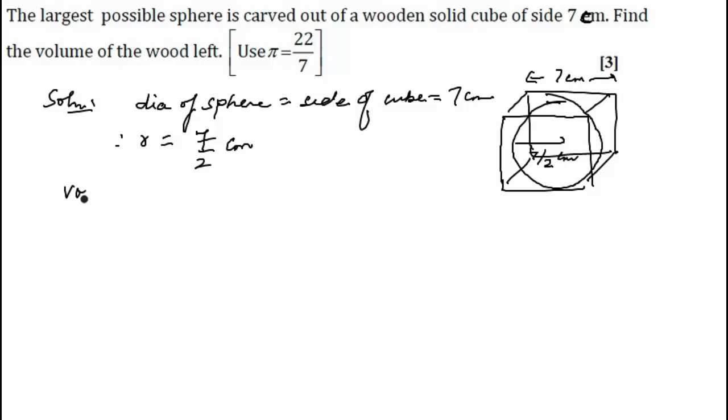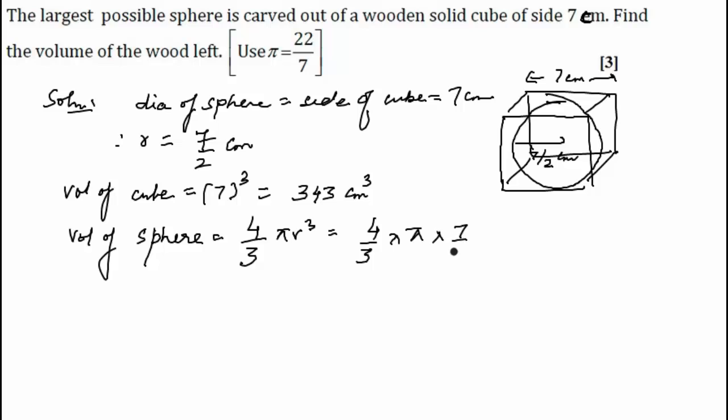Volume of cube is equal to 7 cube, that is 343 centimeter cube. And volume of sphere will be equal to, by the formula, 4 by 3 pi r cube, which is 4 by 3 pi times 7 by 2 whole cube centimeter cube. On solving this we get 179.66 centimeter cube.